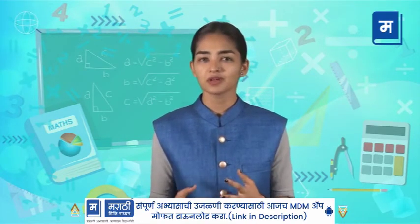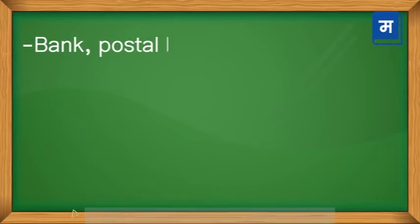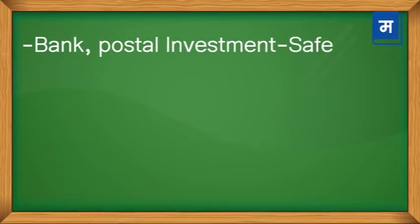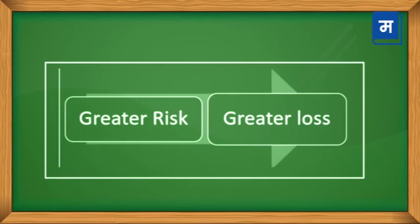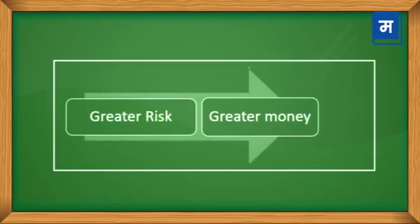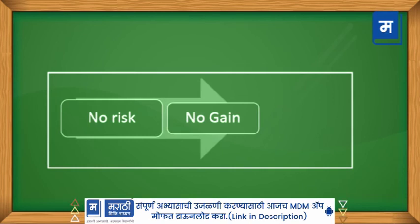Investments in banks or post offices are preferred as they are very safe. There is a little risk in investing money in shares and mutual funds because this money is invested in a business or industry. The investor has to suffer a loss if the business does not perform well. Two important points: greater risk, greater loss; greater risk, greater money; no risk, no gain. In this way, the father has explained investment to his family.